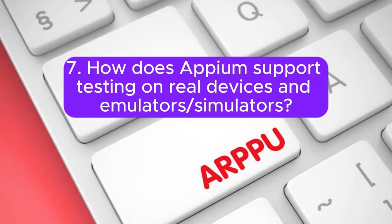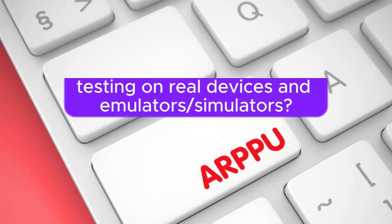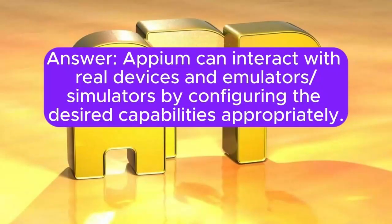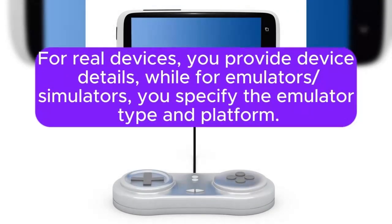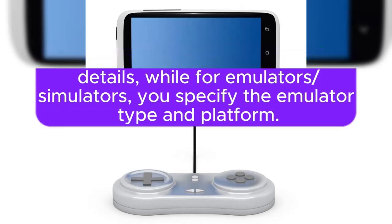7. How does Appium support testing on real devices and emulators or simulators? Appium can interact with real devices and emulators or simulators by configuring the desired capabilities appropriately. For real devices, you provide device details, while for emulators or simulators, you specify the emulator type and platform.